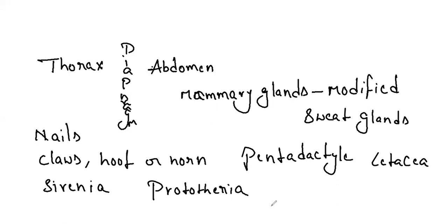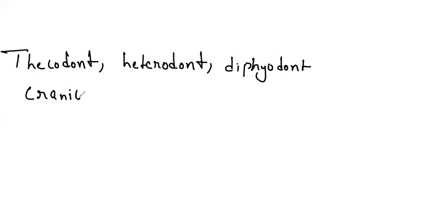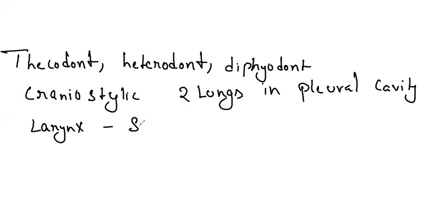The teeth are thecodont, heterodont, and diphyodont, and jaw suspension is craniostylic. The lower jaw is made up of dentary bones. We have a pair of lungs for pulmonary respiration in the pleural cavity. Larynx consists of vocal cords and is mainly for sound production — that is why larynx is called the sound box.